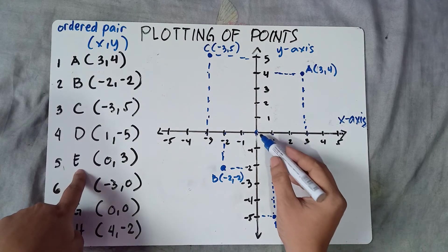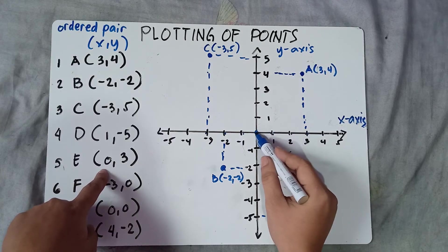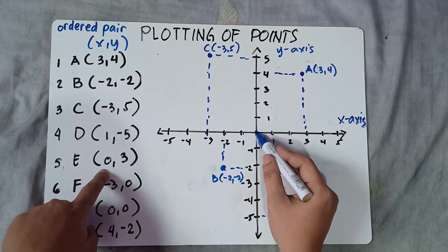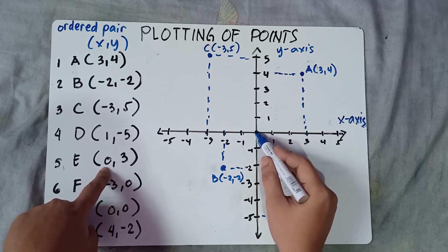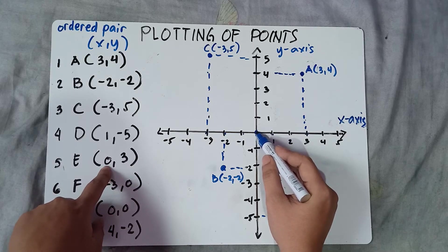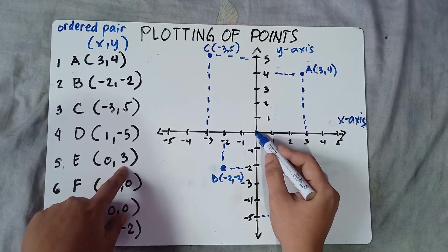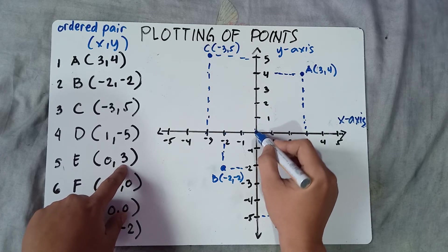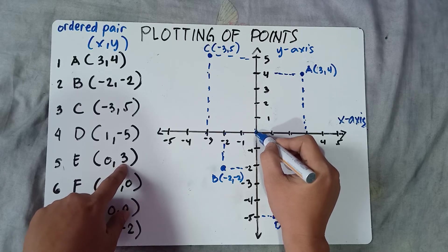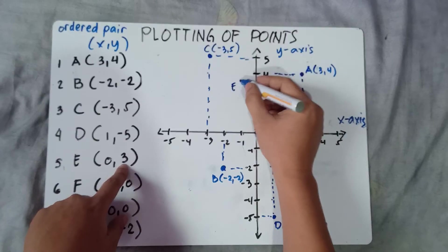Next is E: (0, 3). Starting from the origin, x is 0, so you will not move — you cannot move right or left since x is 0. Stay at the center. Y is positive 3, so you move 3 units upward — 1, 2, 3. That's the point. Label E equals (0, 3).